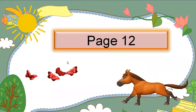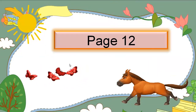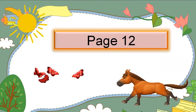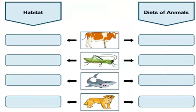Okay, let's try to answer your activity book. Please open your book on page 12. You are going to write the habitat of these animals and the diets of these animals. Diets are the types of food animals eat. Start from cow — what is the habitat of cow? Farm. How about the food of the cow?